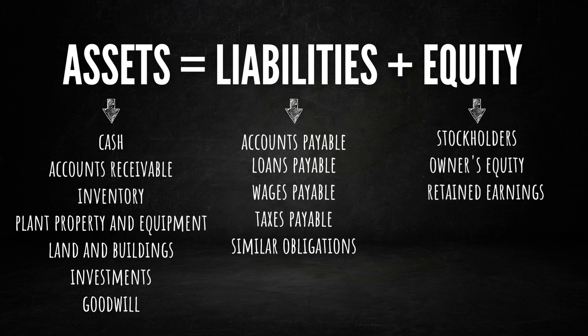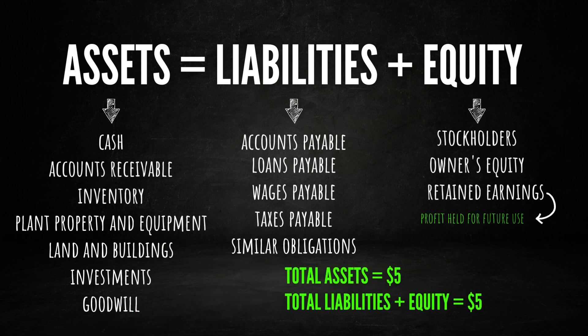Retained earnings, which we'll explore in more detail in a future lesson, can be understood as profit held for future use. By assigning totals to the categories mentioned above, we can see that the equation always maintains its balance. It's a fascinating system that keeps everything in check.